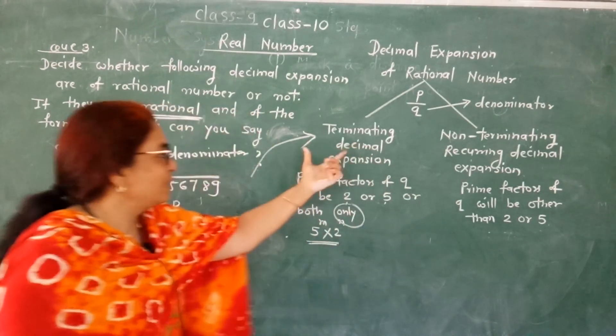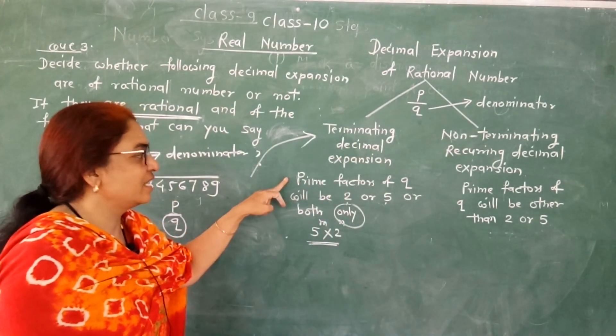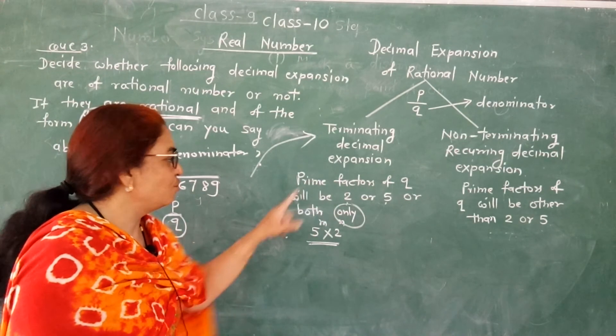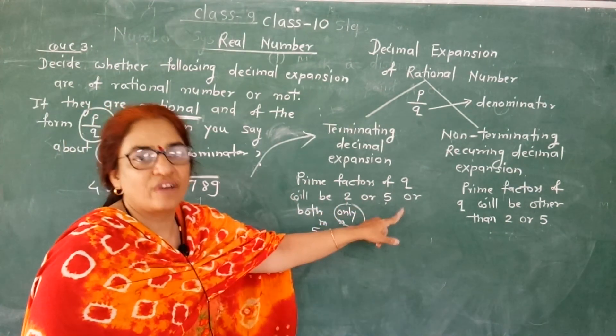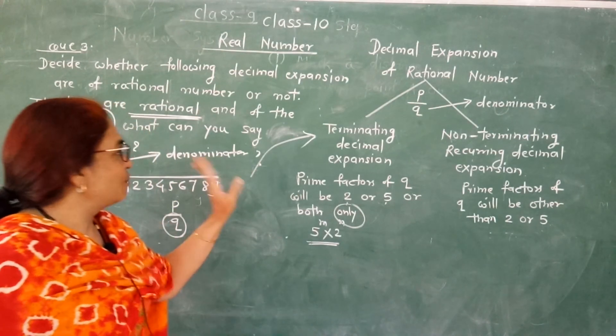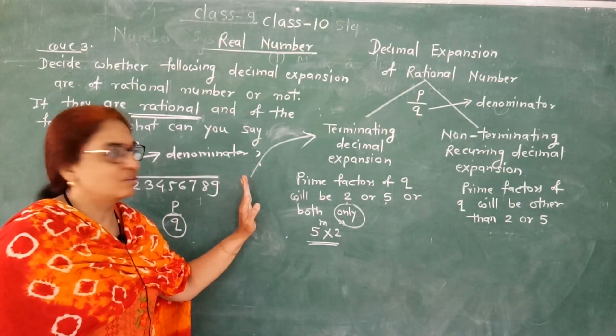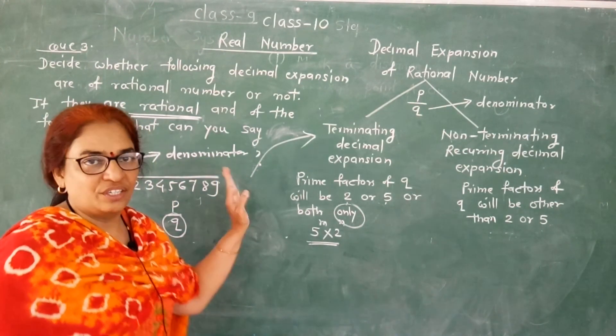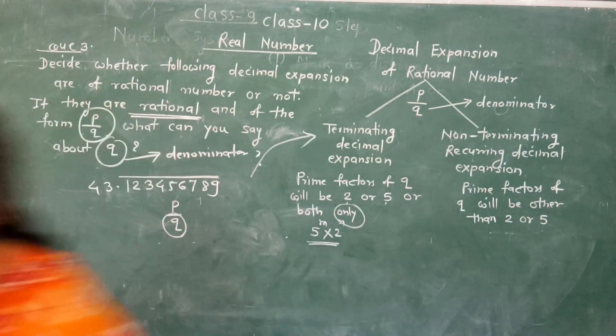And if decimal expansion is terminating, then the answer is: prime factors of q will be 2 or 5 or both only. I hope you understood. If you have any problem or doubt, please message me. Okay, bye.